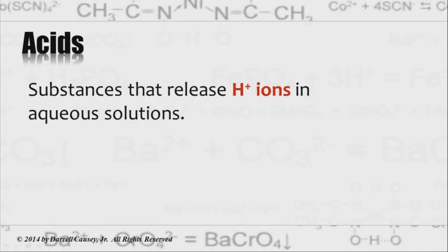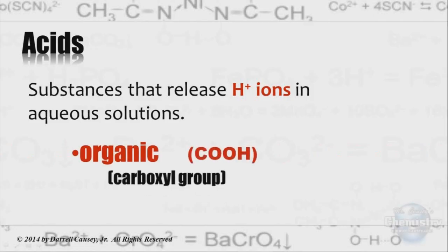What is an acid? For our purposes, an acid is a substance that releases hydrogen ions or hydronium ions in aqueous solutions. There can be inorganic acids such as hydrochloric acid, and there are organic acids that have the carboxyl group, like amino acids or something like acetic acid.